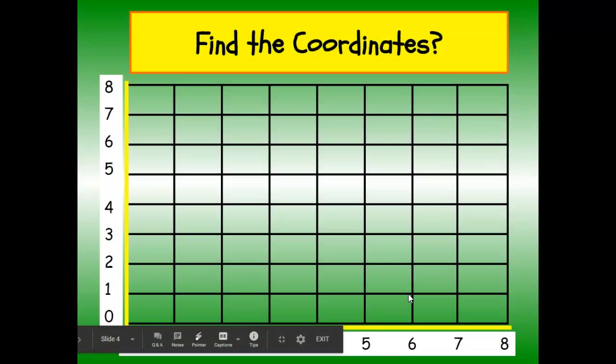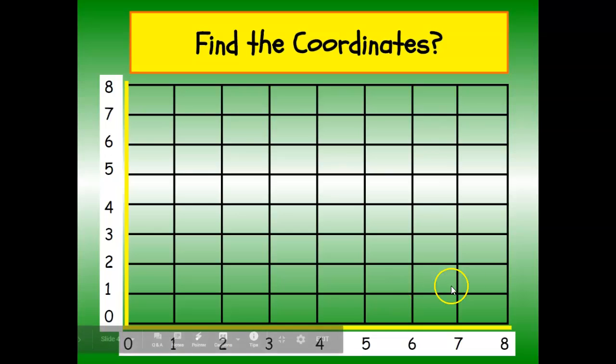We're going to practice some coordinates here. So I want you to, as I show you the boat, because it's going to be kind of like Battleship. As I show you the boat, I want you in your head to think about what that coordinate would be. Remember, you go over and then up. So what would that ordered pair be? First, our first boat flies in. Think about it.